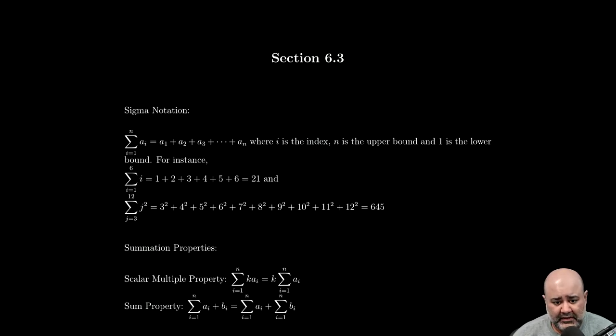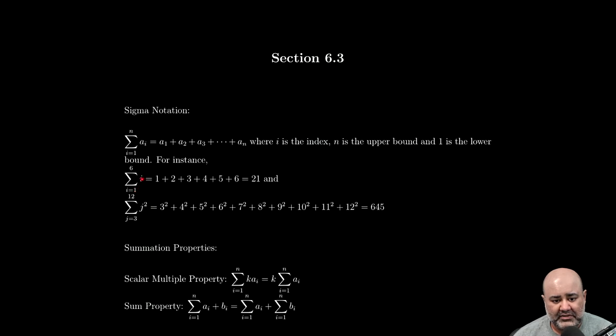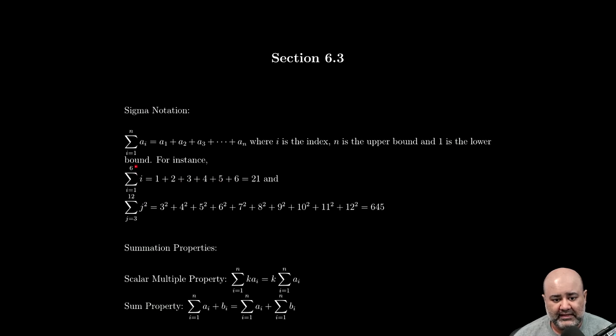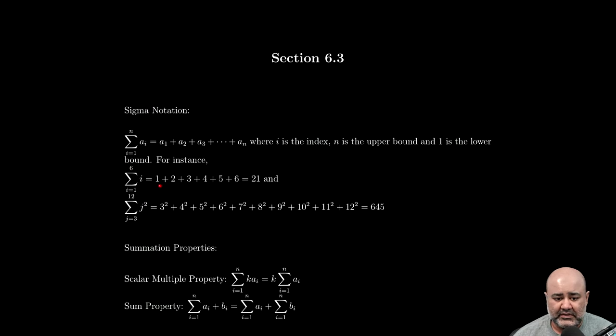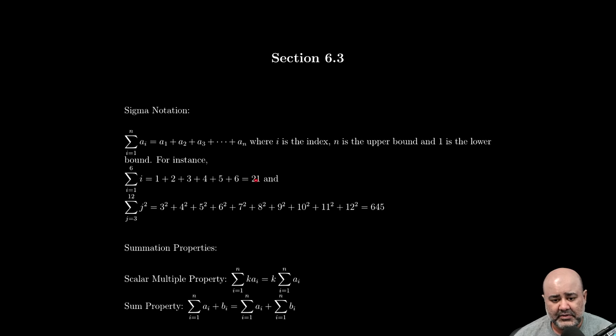For example, the summation of i from i equals one to i equals six means plug in one to get just one by itself, plus two plus three plus four plus five plus six. The moment you get to the upper bound you stop. If you add up the first six natural numbers you get 21.